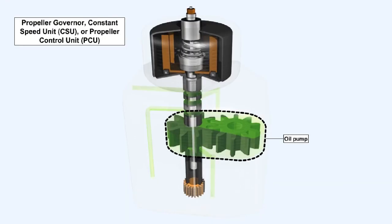Whichever type is used, the flow of oil to and from the actuating piston is controlled by a propeller governor. Dependent on the propeller manufacturer, the governor may also be known as a constant speed unit or propeller control unit. In addition to controlling the propeller pitch angle, the unit normally incorporates a small oil pump, which increases the oil pressure to the value required for system operation.